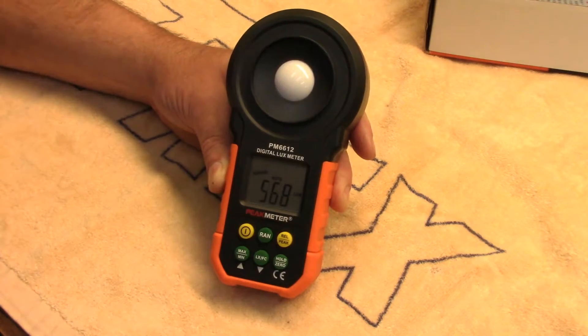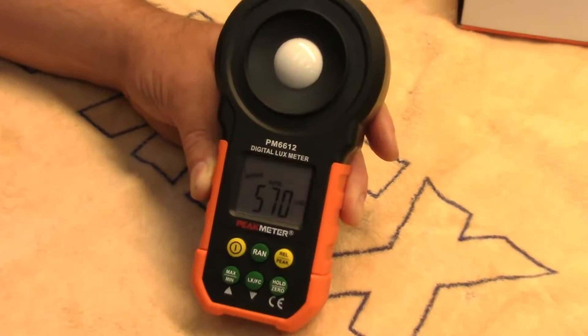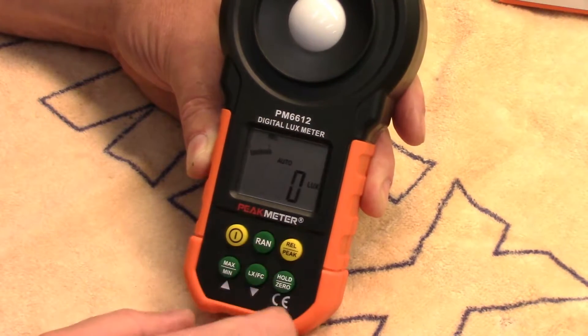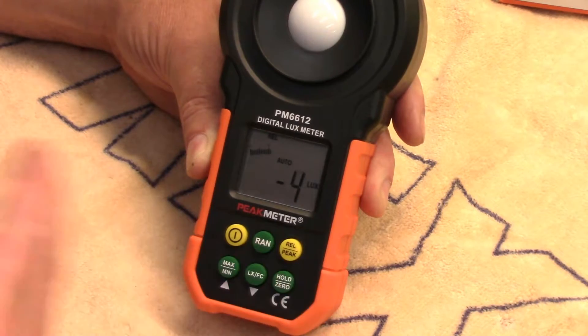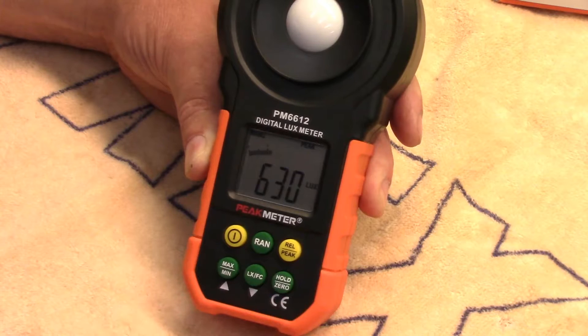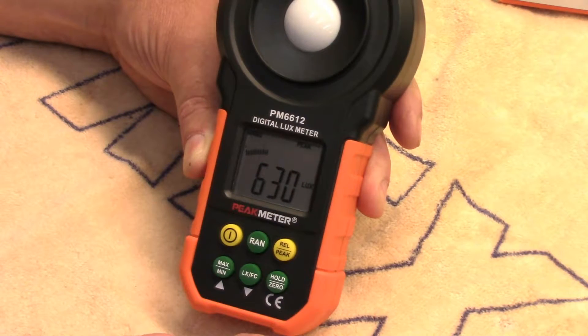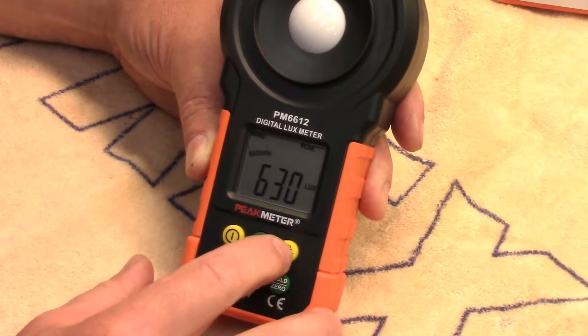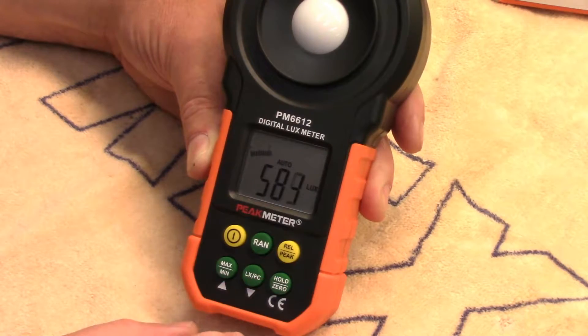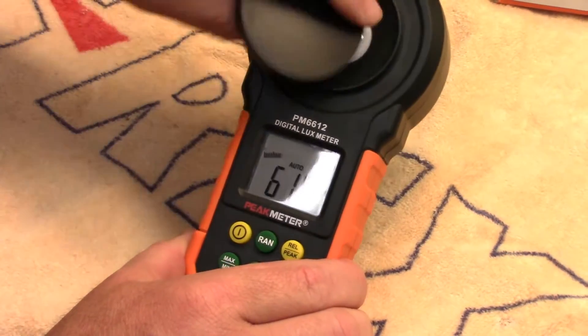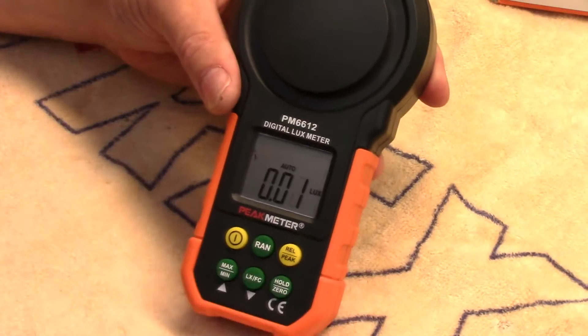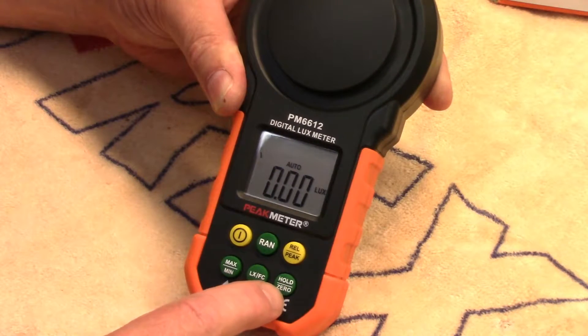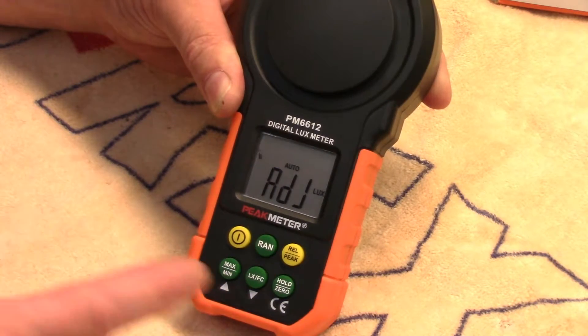You've got a relative function so you can zero it out if you want and then read as it counts down. It's also got a peak function which will apparently store a large flash. You've got a hold function and a zero function, so that's to calibrate. If you put the cover on, it seemed to be calibrated really well right out of the box. You can see it's reading zero with the cover on, but if you hold this down it'll go into a calibration adjust.